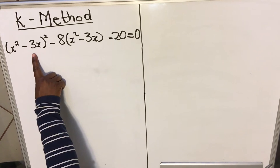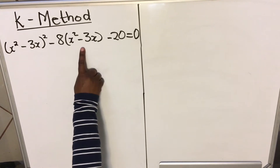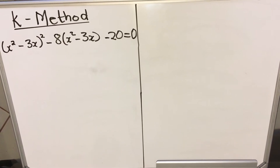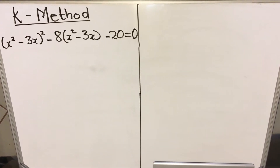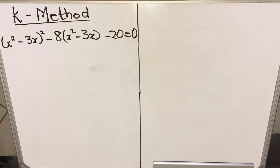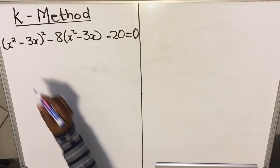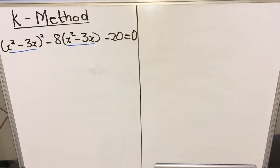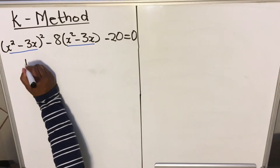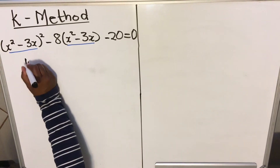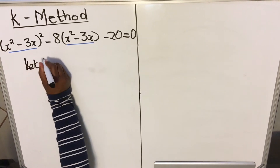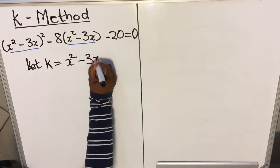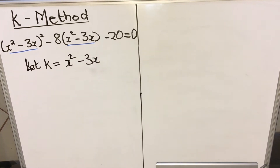Now when you look, you have x squared minus 3x, and you have x squared minus 3x again. So what we do is we choose a variable — in this case we usually choose k — and we say k is equal to that part that is complex. So we say: let k equal x squared minus 3x.